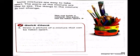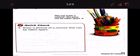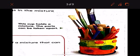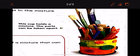Some mixtures are easy to take apart. The parts of the mixture are easy also to see. The things in the mixture do not change. Like this. This cup holds a mixture. A mixture of what? Paintbrush, pencils, crayons. So this cup holds a mixture. The parts can be taken apart. That means we can separate them. Alright?